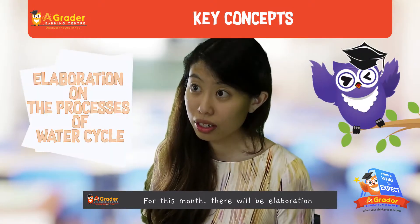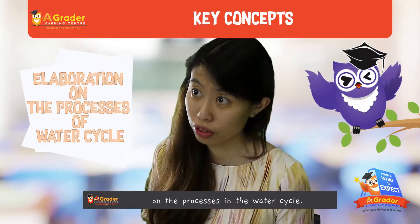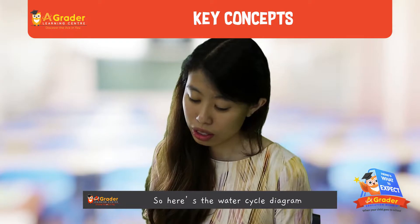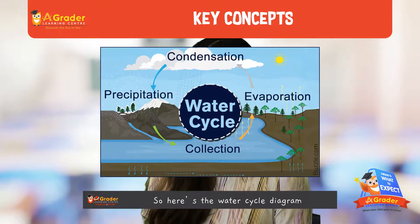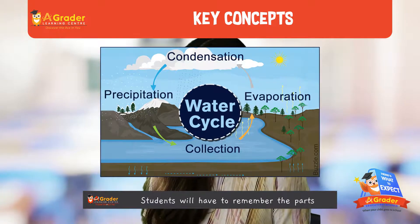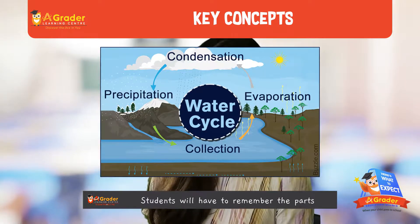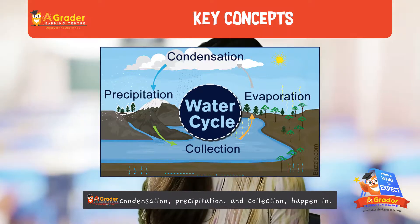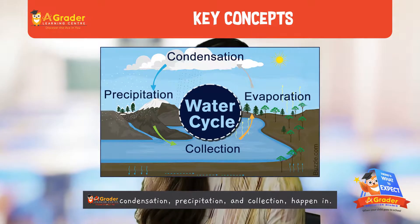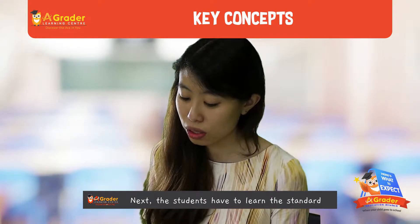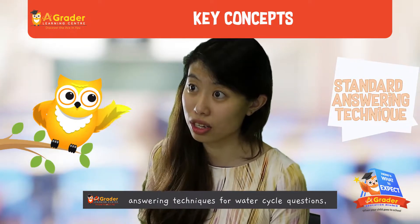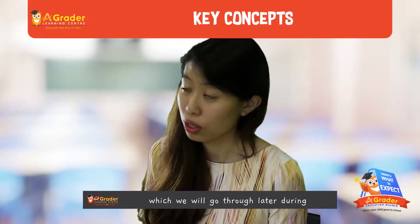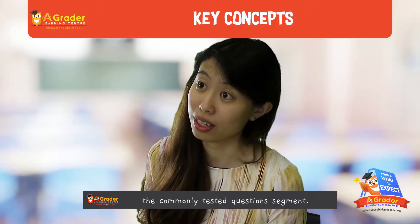For this month, there will actually be an elaboration of the processes of the water cycle. Here is the water cycle picture shown, and students have to remember which part these processes — evaporation, condensation, precipitation, and collection — actually happen. Next, students have to learn the standard answering technique for water cycle questions, and we go through these later in the commonly tested questions.